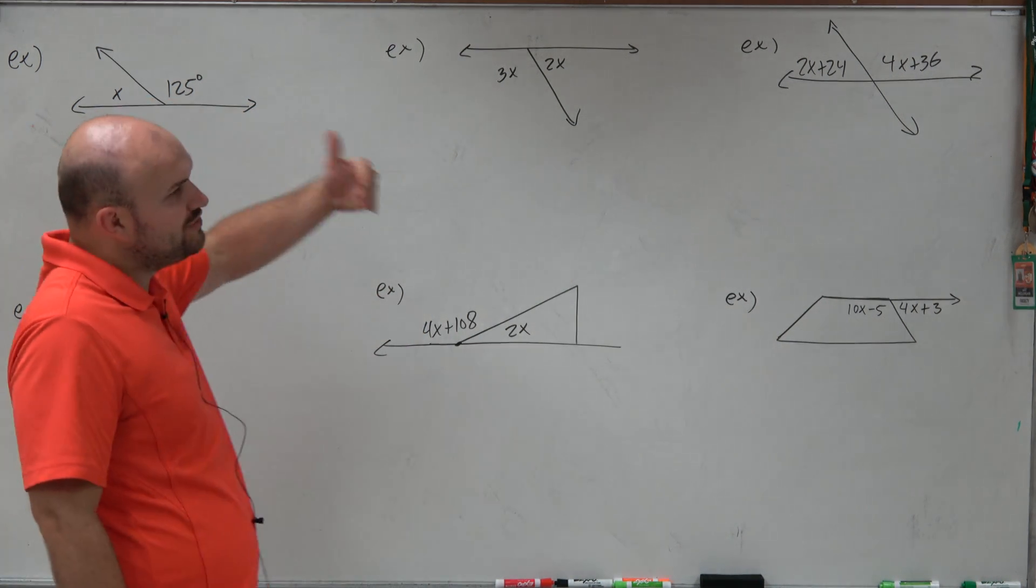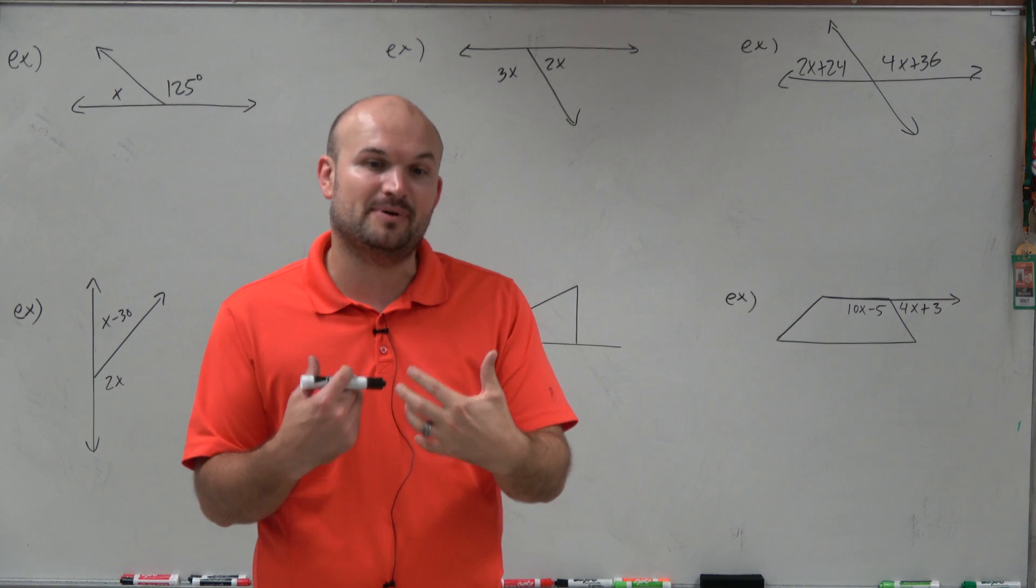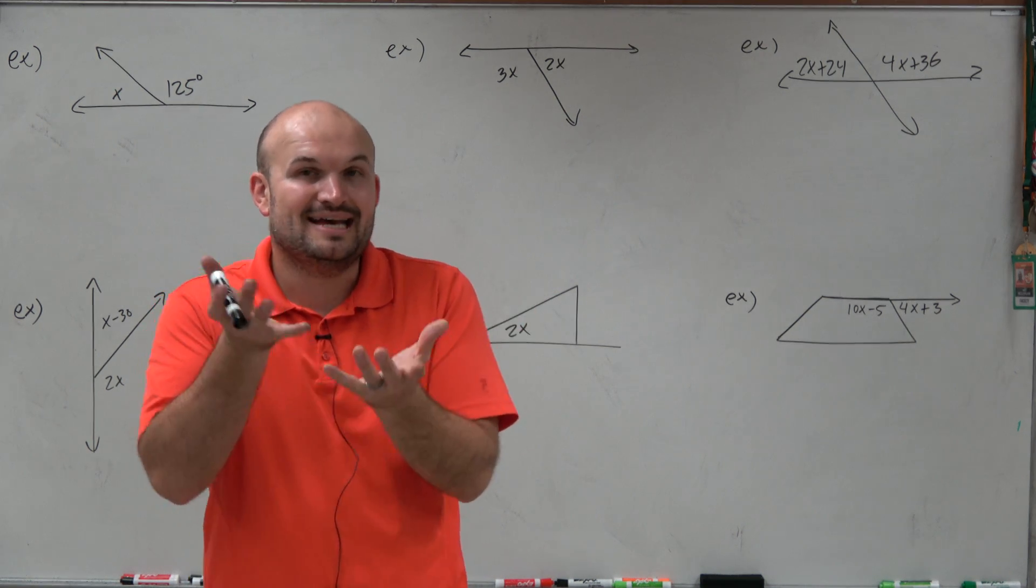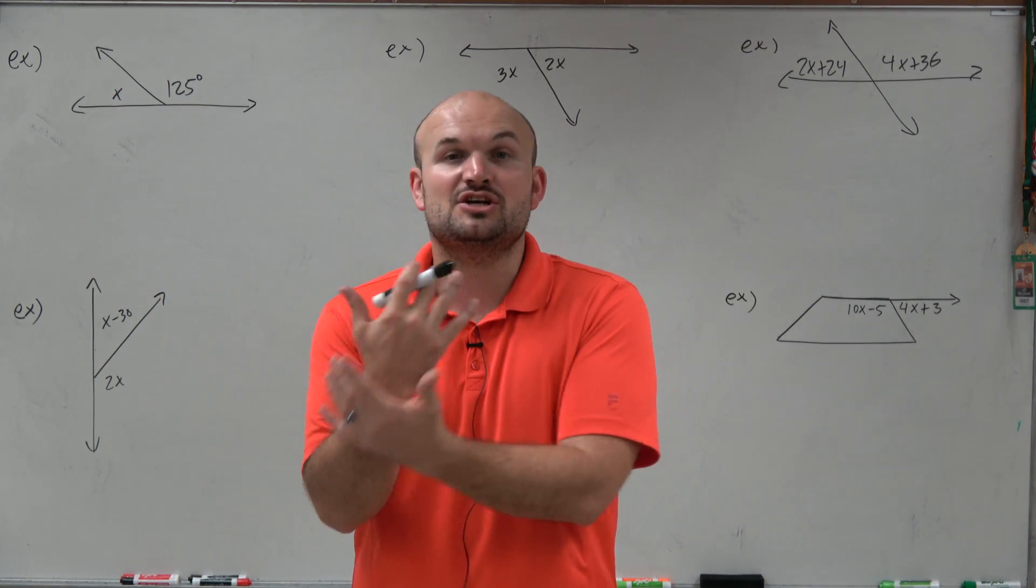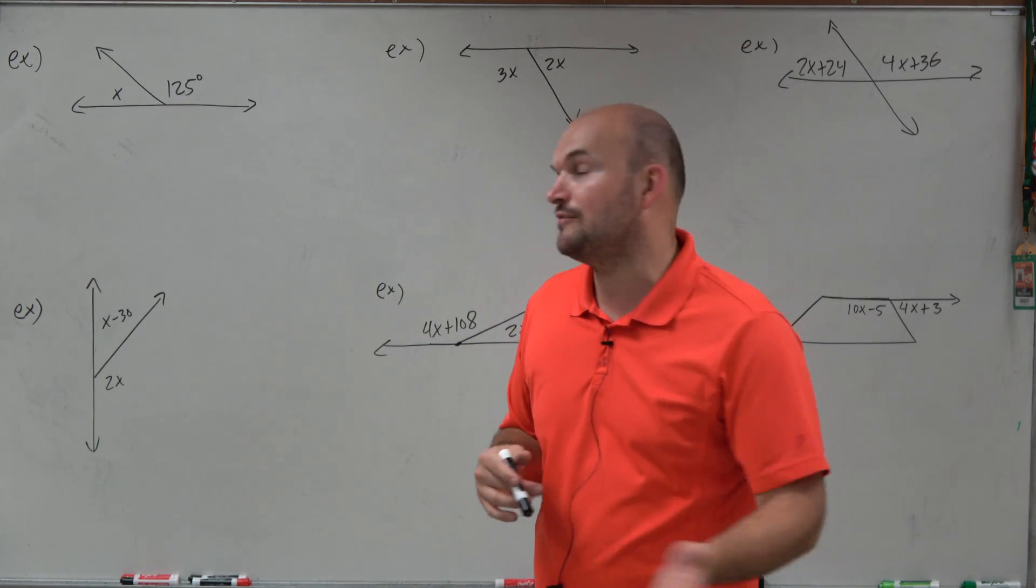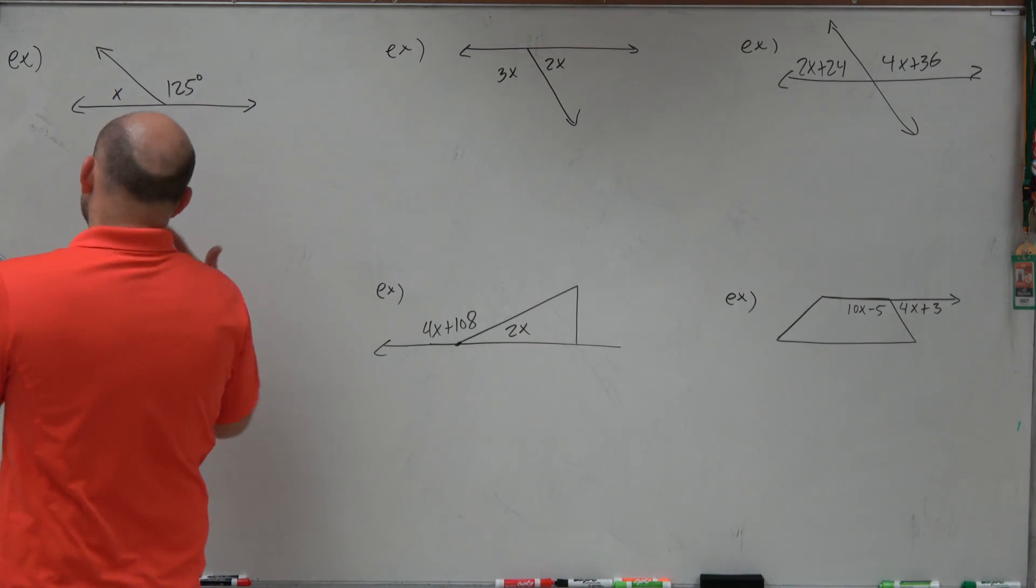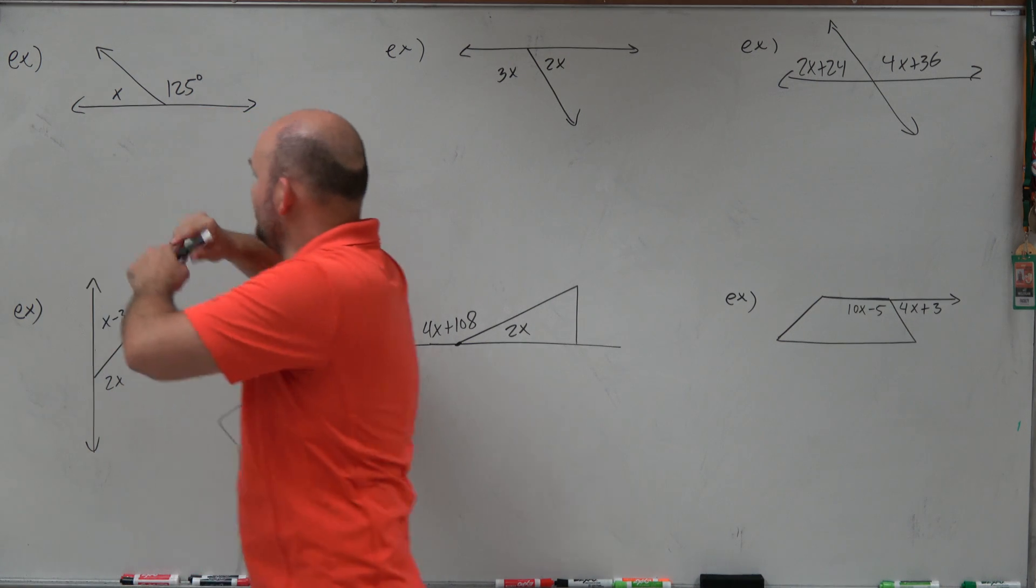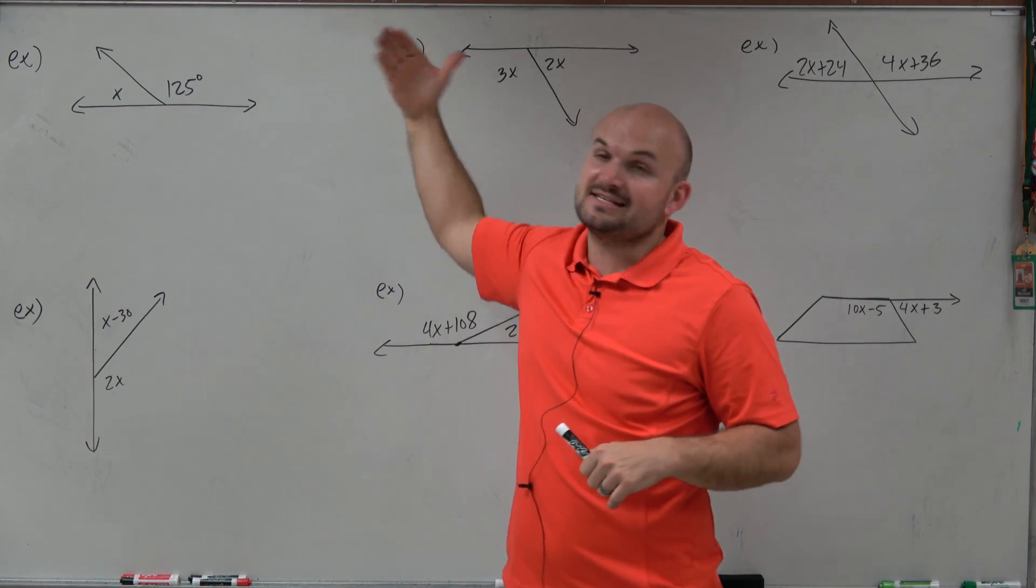And even more importantly, we need to remember that supplementary angles add up to 180 degrees. So what we can do is by using that information, we know we can set up an equation of adding the two angles equal to 180, and then we can solve for our x, and then we can find the missing measure of our angles. So we'll start with something very basic. We can see that you have a line here.